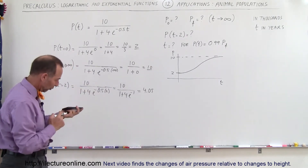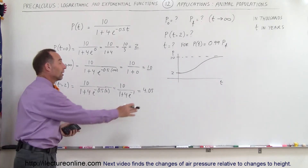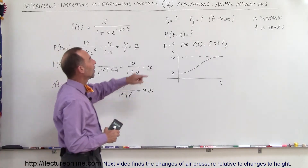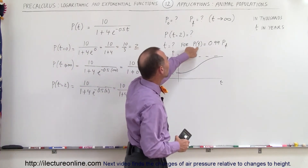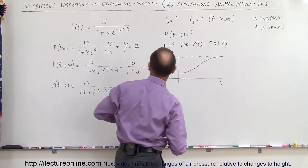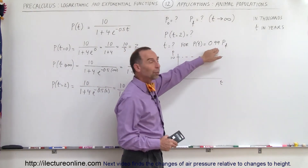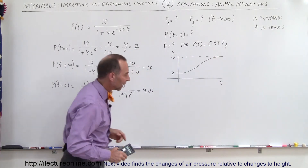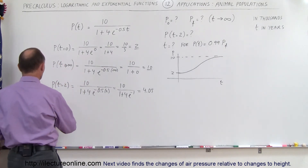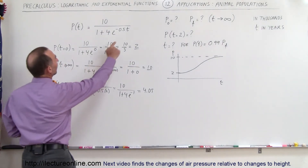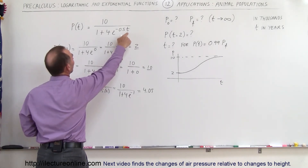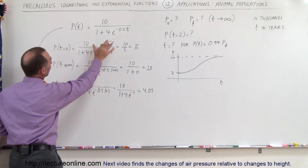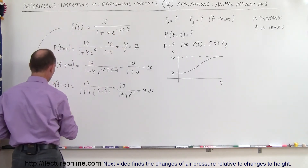Finally, we want to find how much time must pass for the population to reach 99% of its final value. Since the final value is 10,000, 99% of that is 9,900. So how long will it take for the deer population to reach 9,900? We need to solve the equation for t.